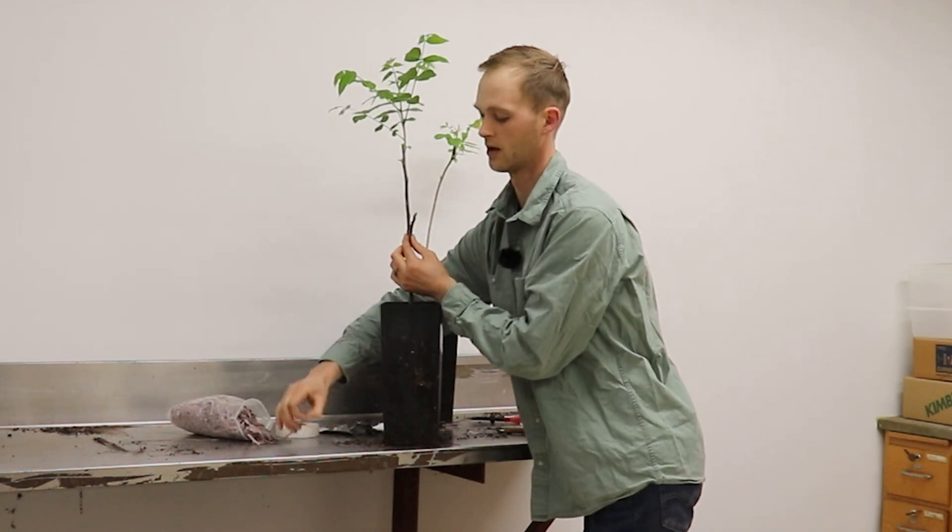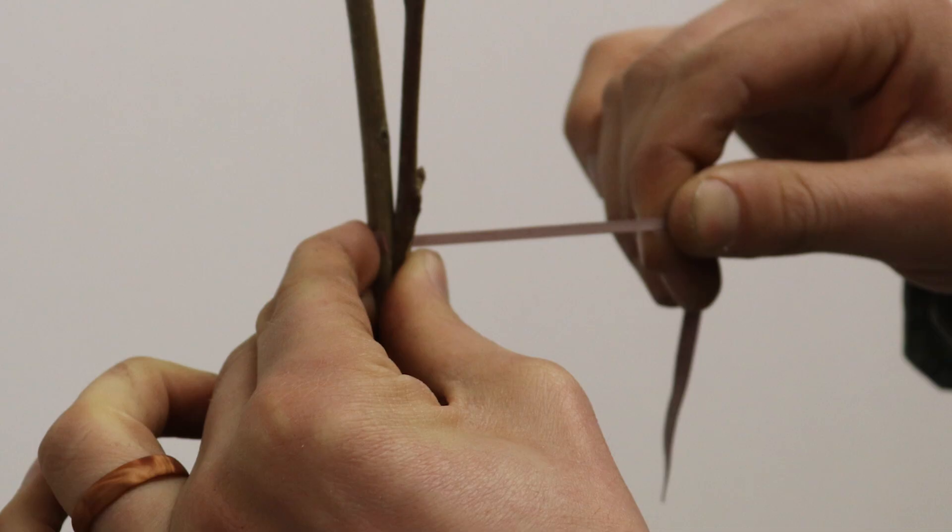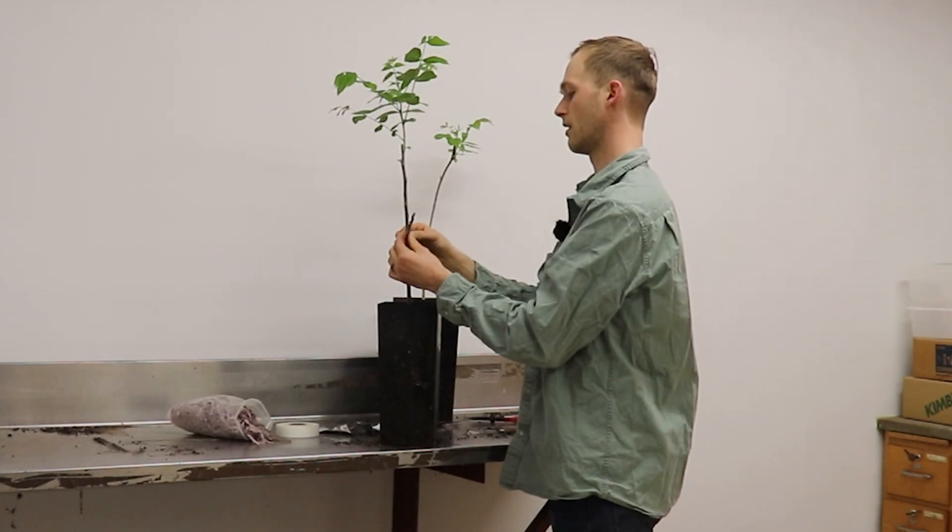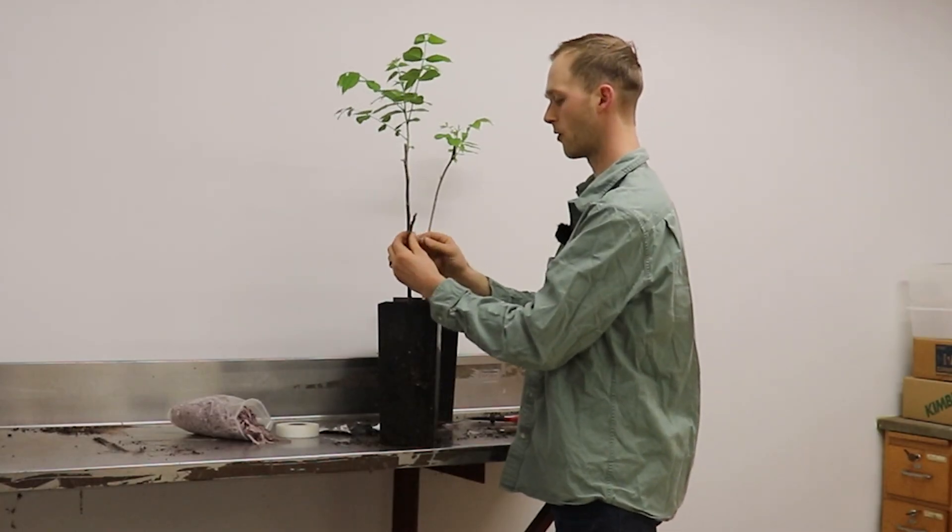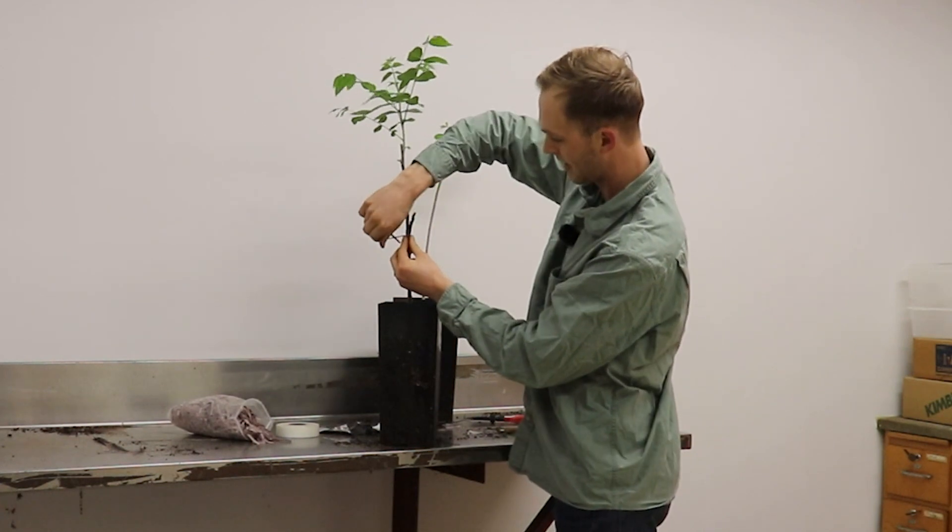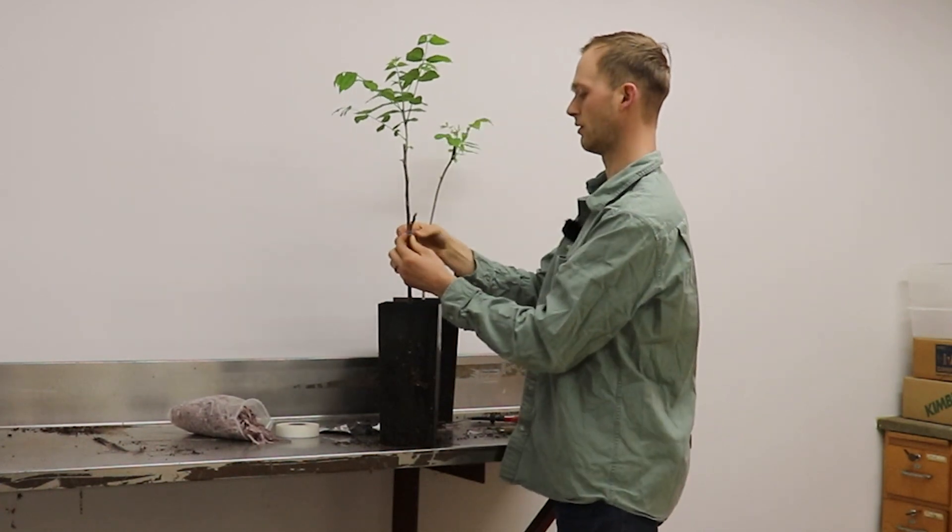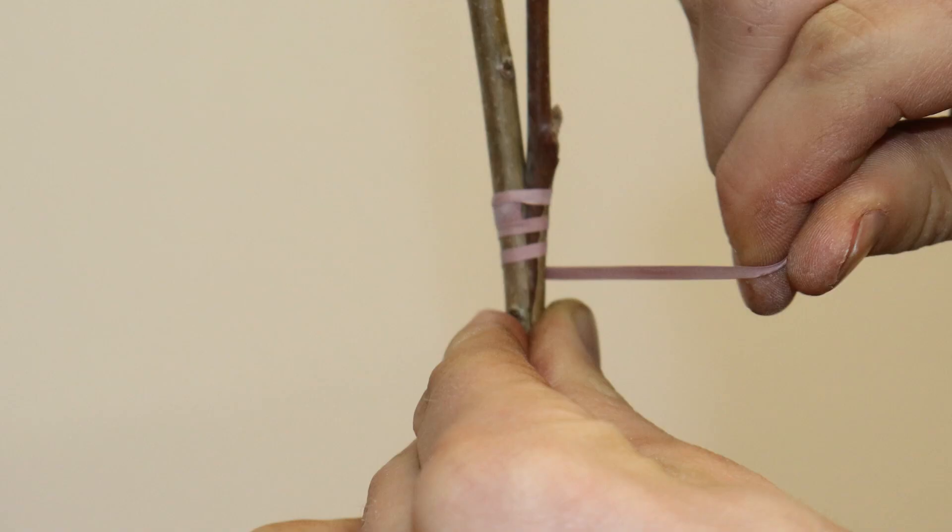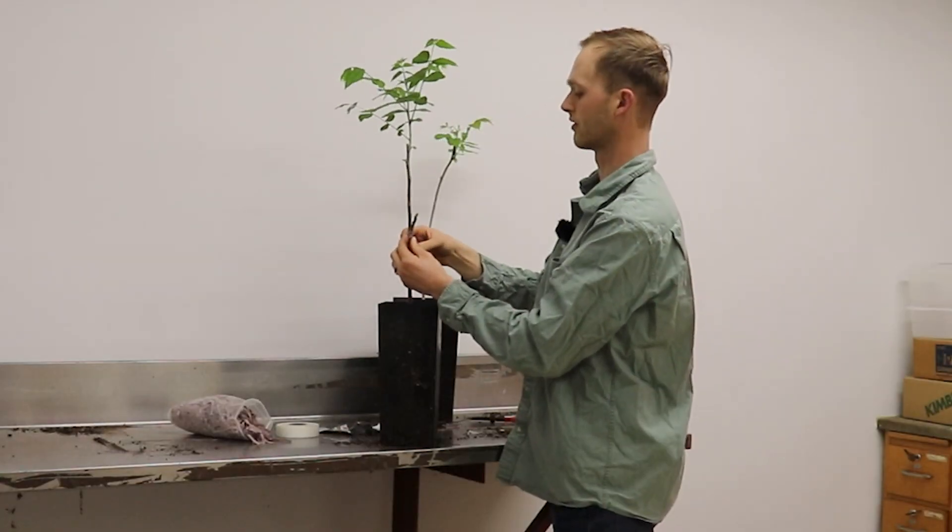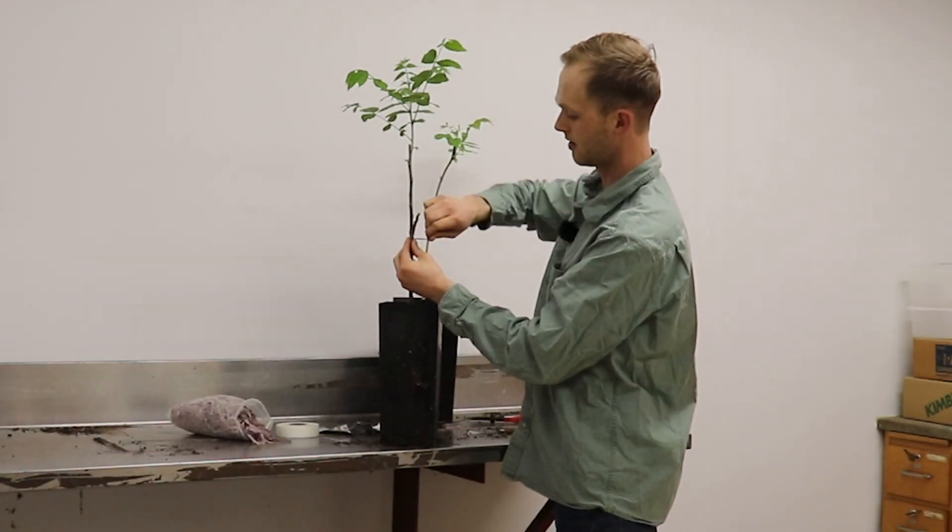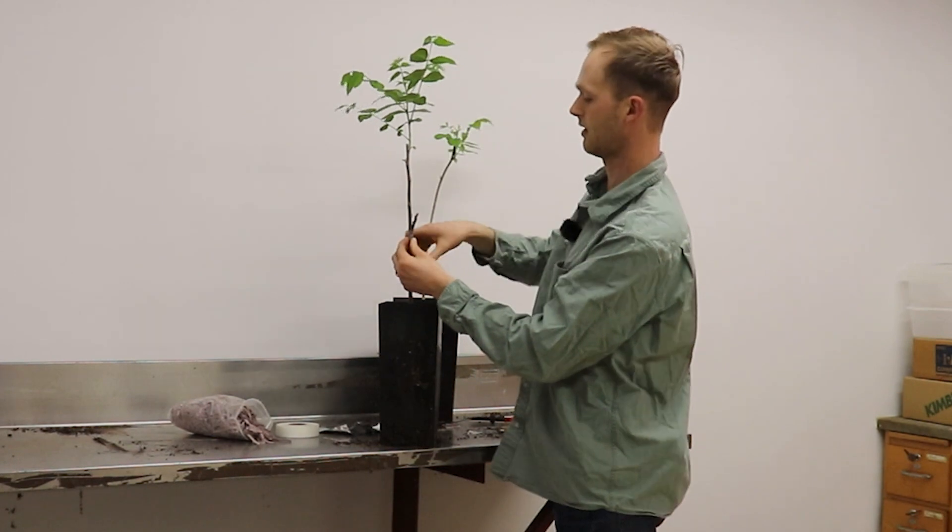And with this cambium lined up, we take a grafting rubber. Starting from the top, we work our way down, and we kind of help force the scion piece into the graft union. Make sure that it's nice and secure, that there's strong contact between the scion piece and your rootstock.